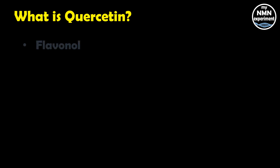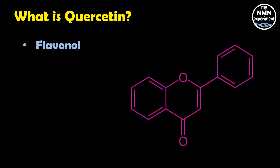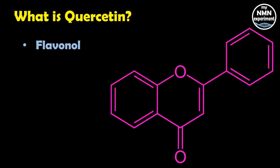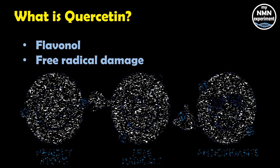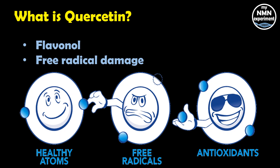Quercetin is a plant flavanol from the flavonoid group of polyphenols. It is one of the most abundant antioxidants in the diet and plays an important role in helping your body combat the free radical damage that has been linked to some chronic age-related diseases.